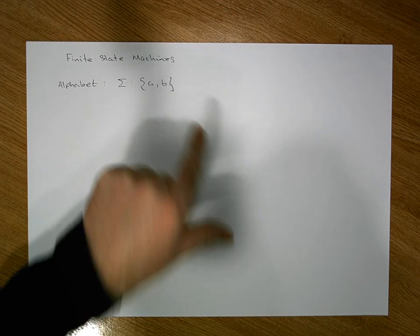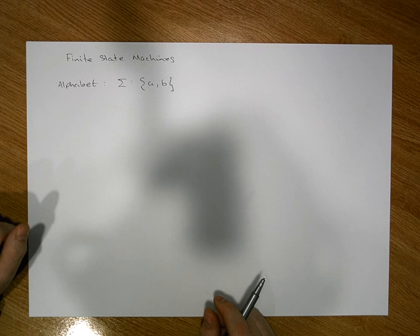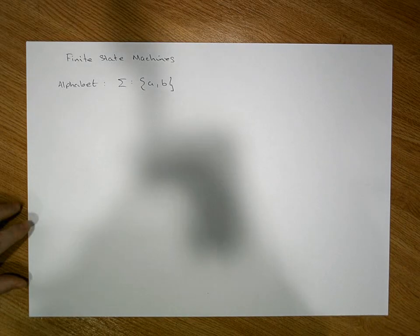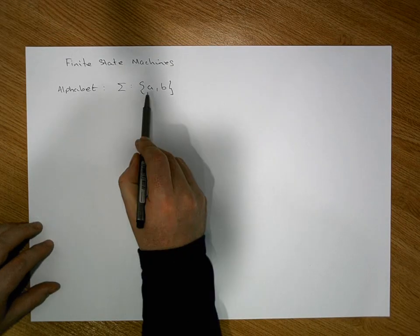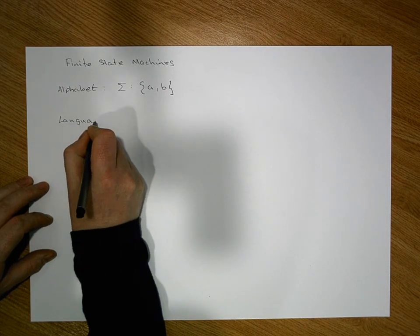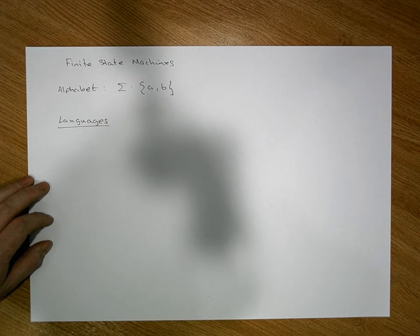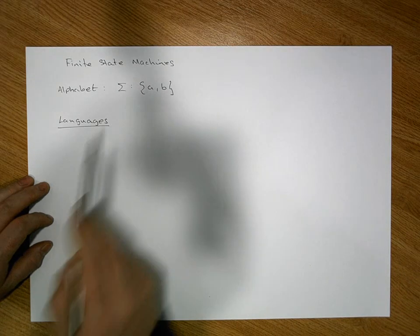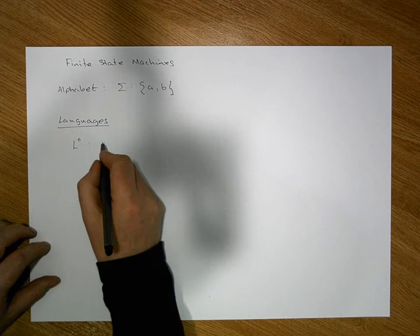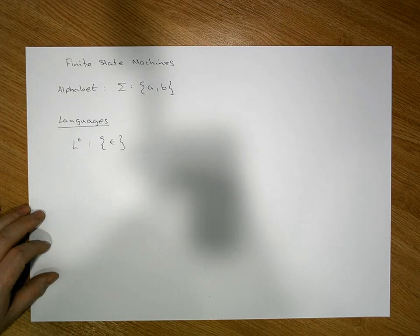We're interested in finite machines that recognize particular languages made up from the alphabet {A, B}. There are an infinite number of languages we could create, but let's look at the smallest language first. The smallest language we could have is the language of words of length zero, which is the empty string. Let's call that L0, the language consisting only of the empty string, symbolized by epsilon.